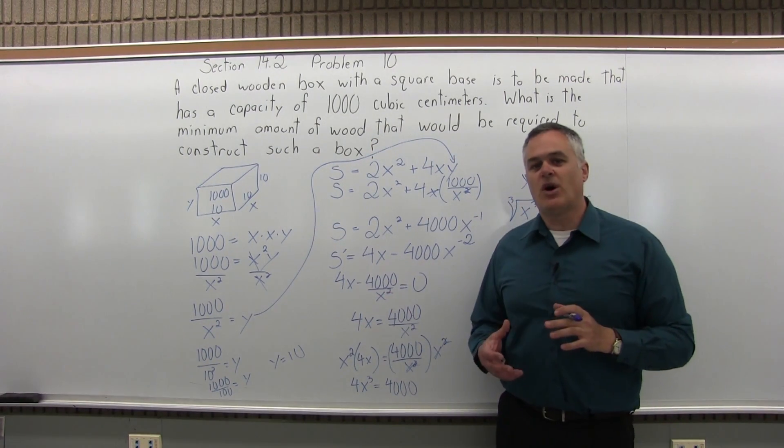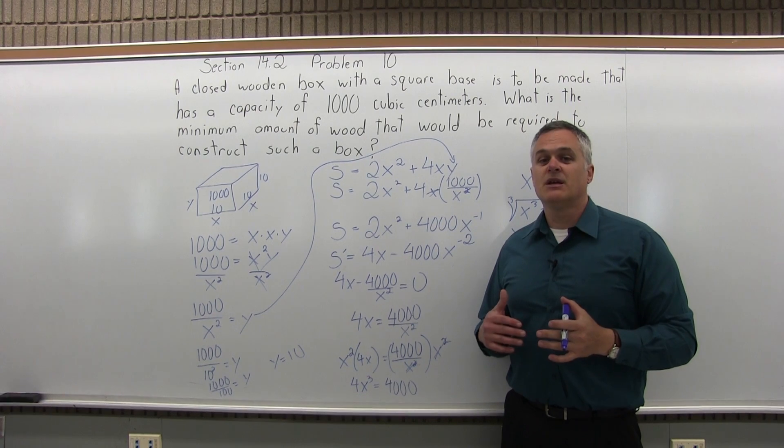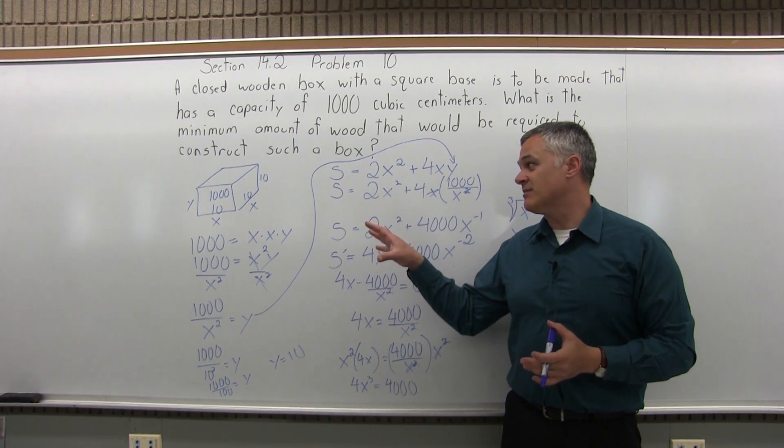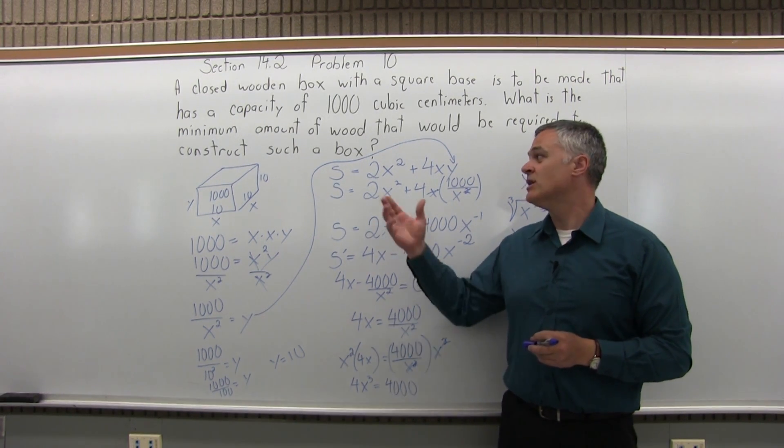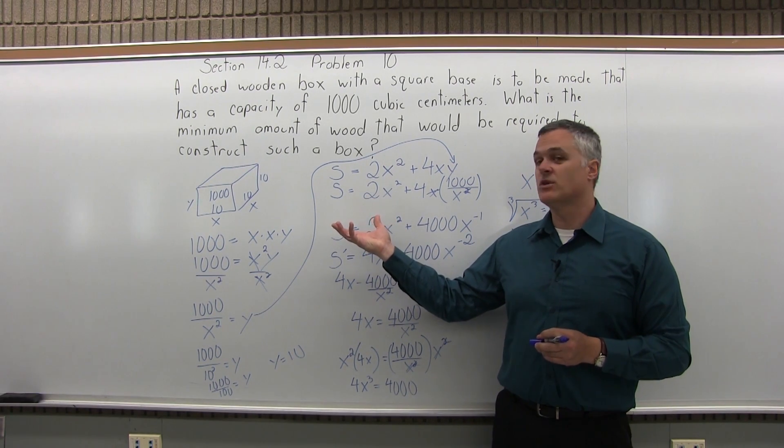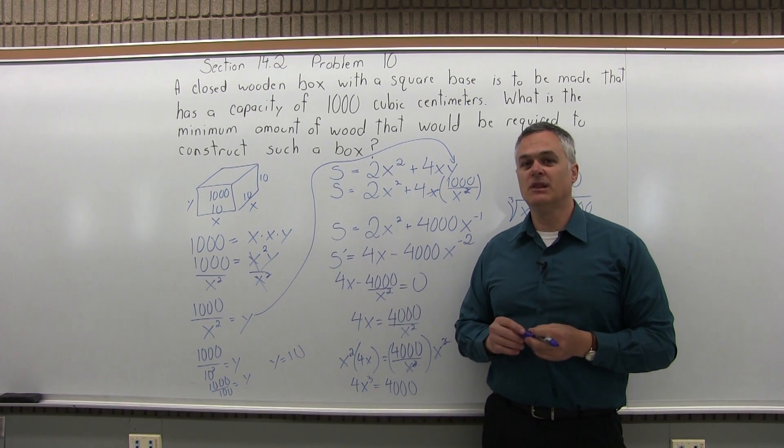So the best dimensions for your box are a 10 by 10 base and a 10 height, and that's all in centimeters. And that'll give you 1,000 cubic centimeters of volume that are required and use up the least amount of wood.